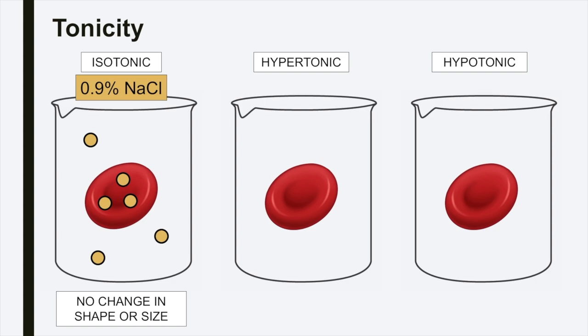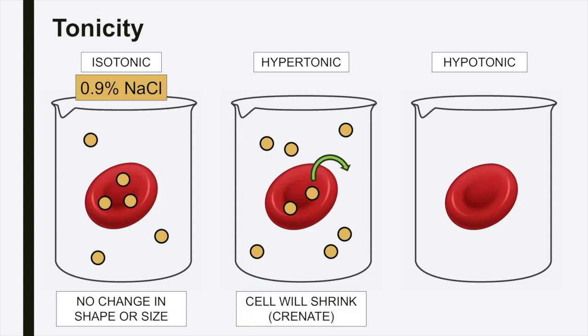In a hypertonic solution, the concentration of solutes outside the cell is greater than the concentration of solutes inside the cell. If we place a red blood cell into a hypertonic solution, water will flow down its concentration gradient and rush out of the cell — you can also think of it as water moving to an area of greater solute concentration. As water rushes out of the cell, the blood cell will shrink, or crenate.